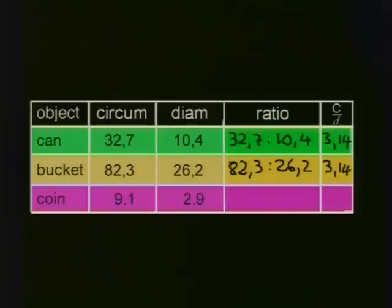For the five-rand coin, we get a circumference of 9.1 cm and a diameter of 2.9 cm. The ratio can be written as 9.1 to 2.9 and we divide C by D and again we get 3.14 rounded off.